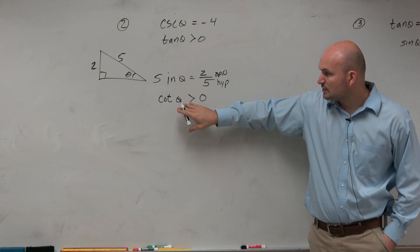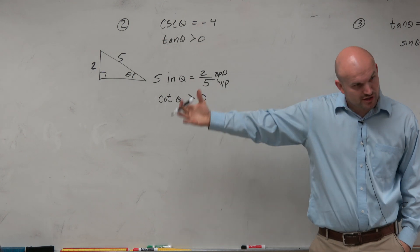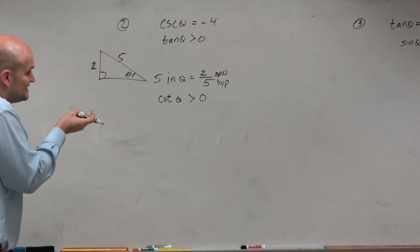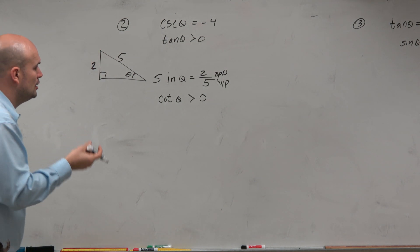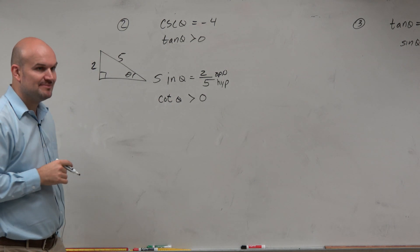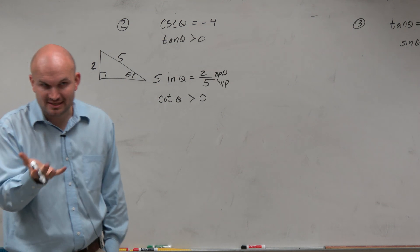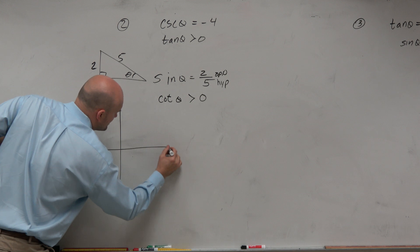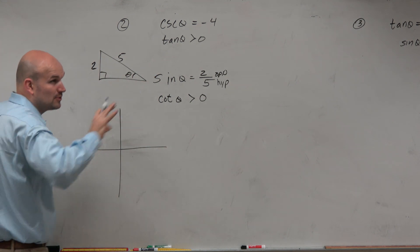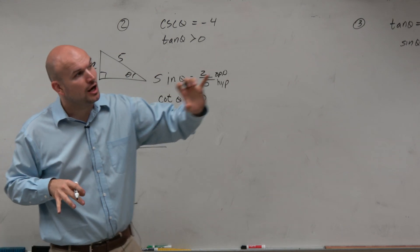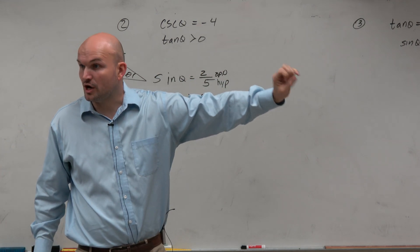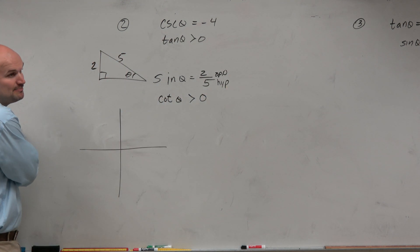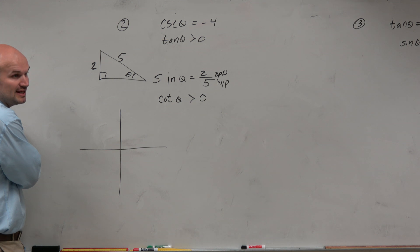However, here you can see we're adding a restriction — a constraint. We're saying yes, the sine of theta equals 2 over 5, but cotangent of theta has to be greater than 0. When we see this constraint, we're going to apply it on our x and y-axis, creating our triangle with regards to a central angle. So we need to identify which quadrant is going to work.